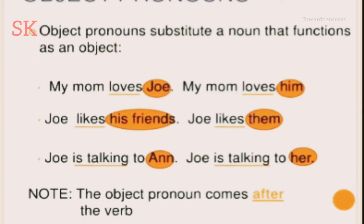Now the nouns are coming after the verb. 'My mom loves Joe' — Joe is a noun coming after the verb, so 'My mom loves him.' 'Joe likes his friends' — friends is more than one, so 'Joe likes them.' 'Joe is talking to Anne' becomes 'Joe is talking to her.'